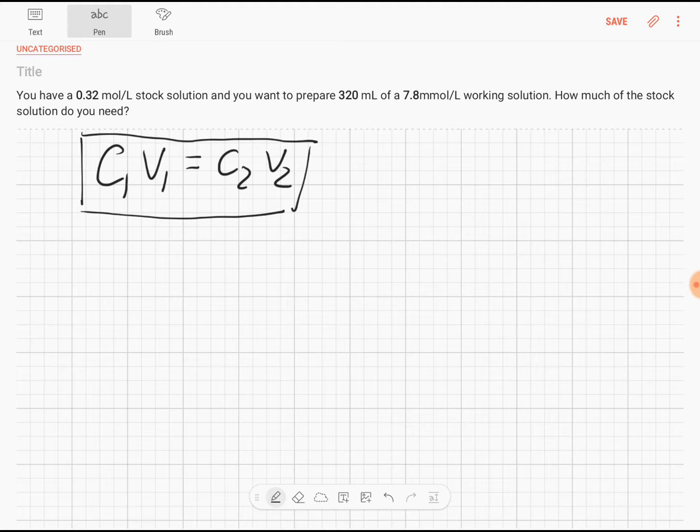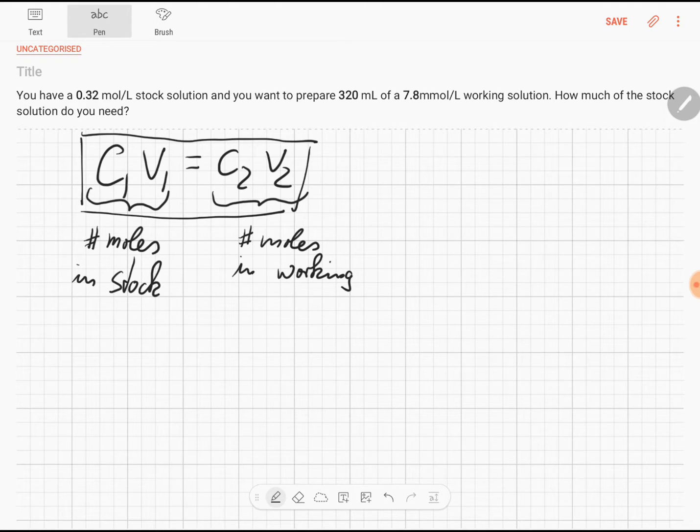To answer this question we simply say the number of moles from our stock solution, C1V1, in the stock solution must be the same as the number of moles in the working solution. All we need to do now is find out how big our volume from the stock solution is.